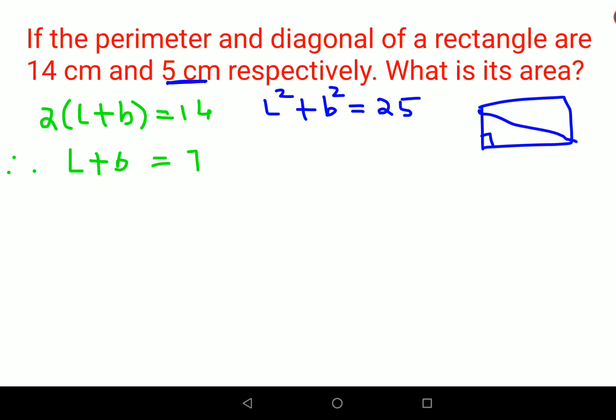Now what we can do is, we need to find length into breadth, right? Because we need to find the area which is length into breadth. So let's square both sides over here, because we already know what is L squared plus B squared. We'll get L squared plus B squared plus 2 times LB equals 49.